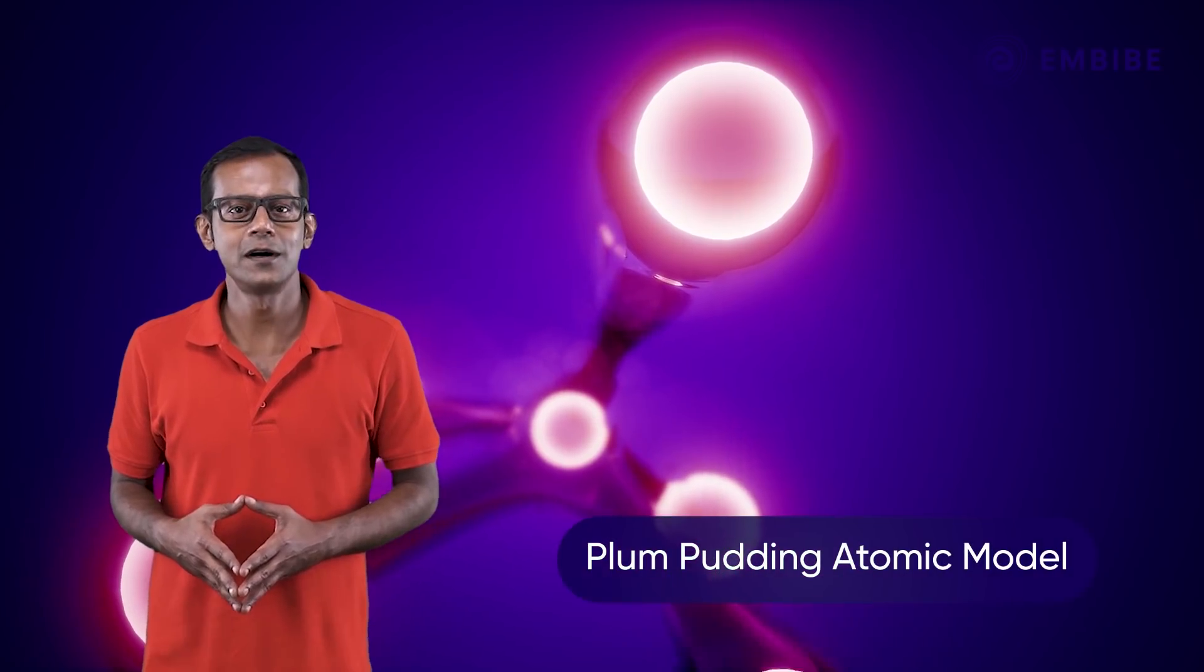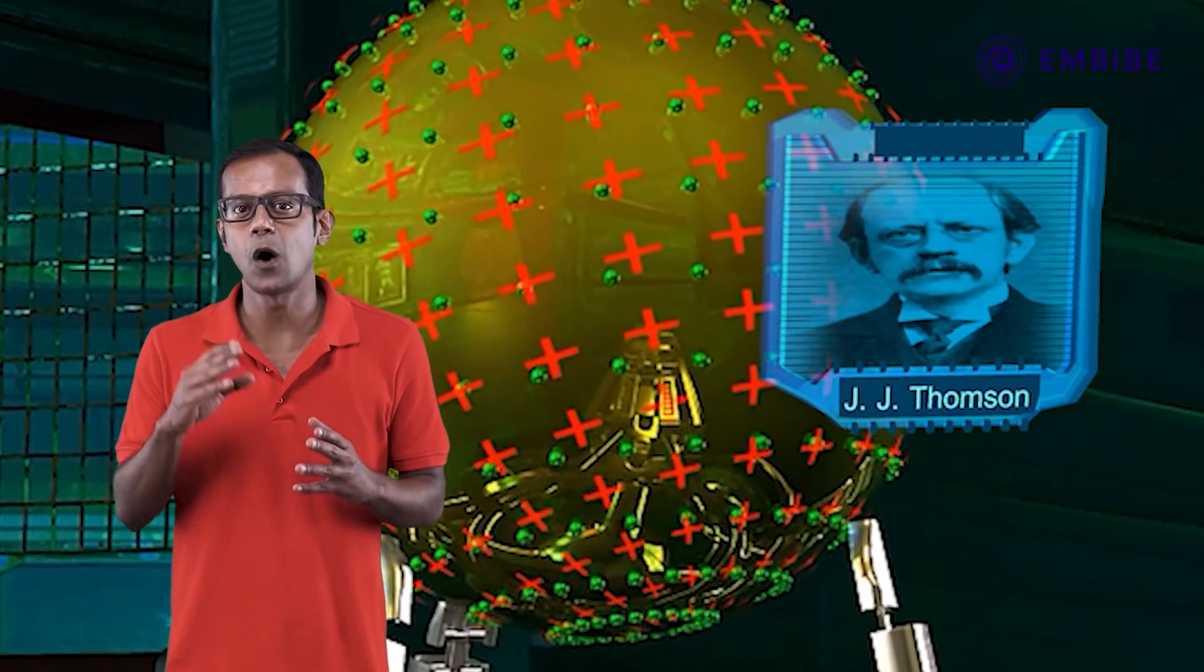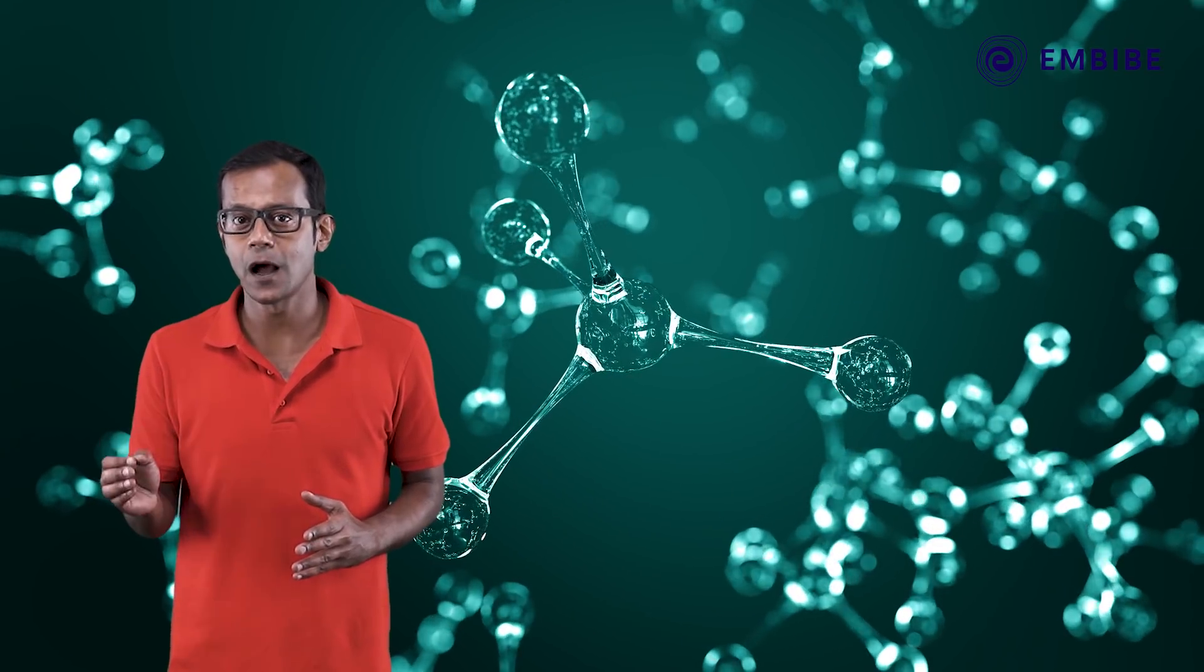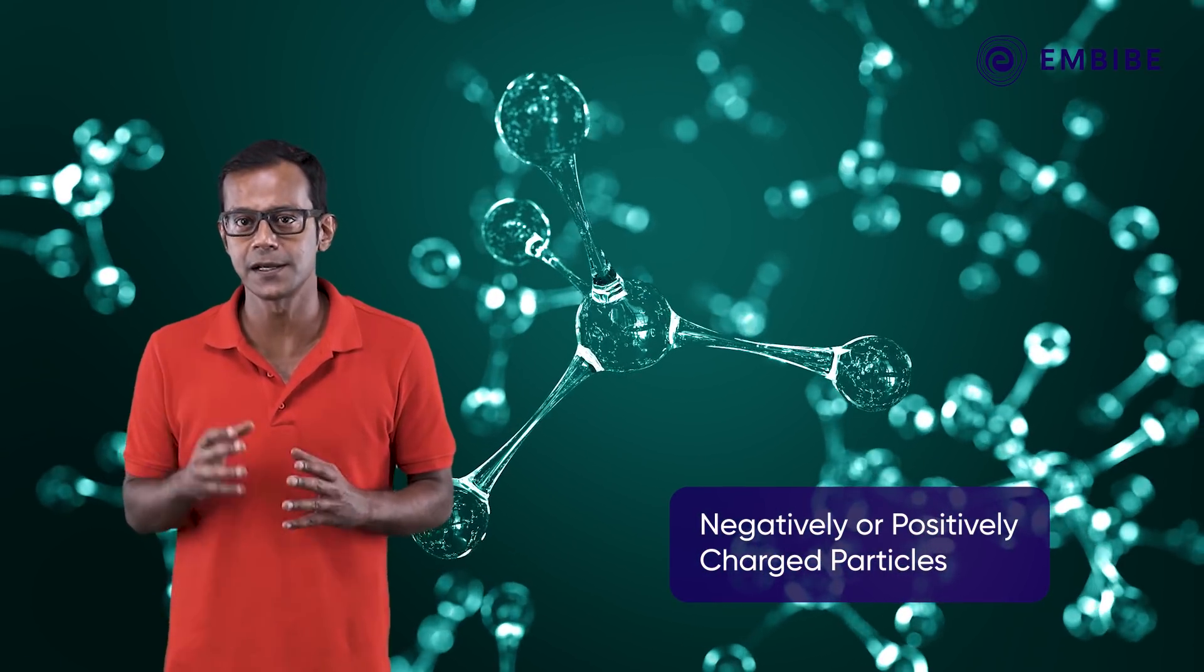Have you heard of the plum pudding atomic model? Scientist J.J. Thompson realized that the accepted model of an atom did not account for negatively or positively charged particles.